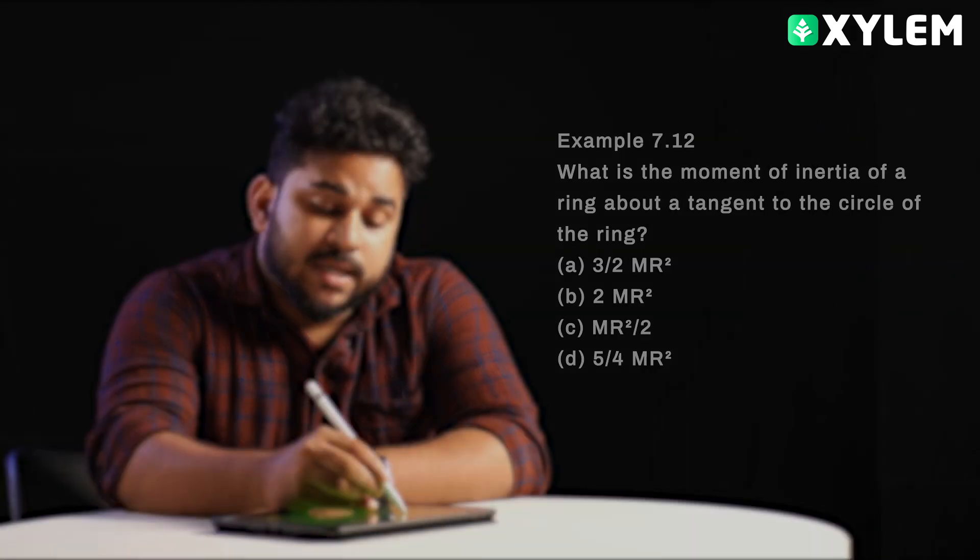We know that in a circle, we have tangents. We need to use the diameter axis by using parallel axis theorem.